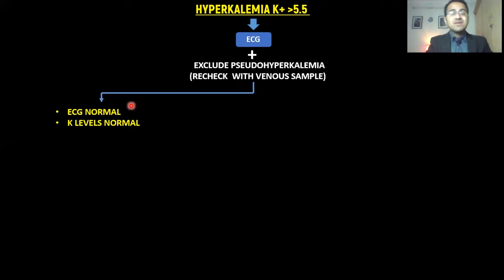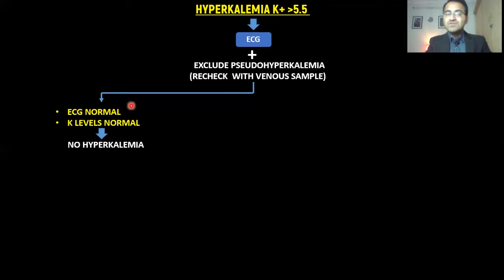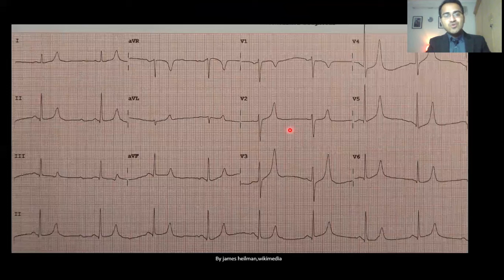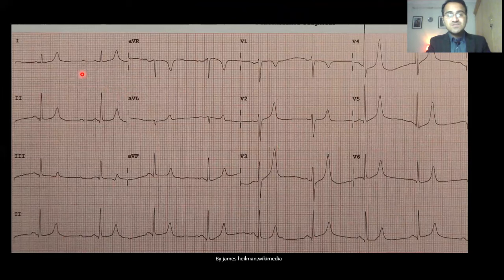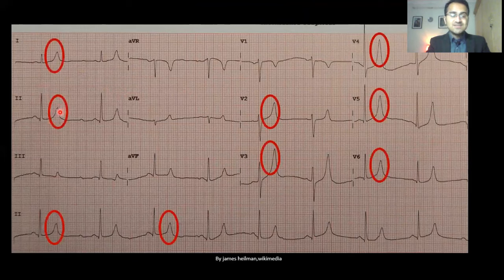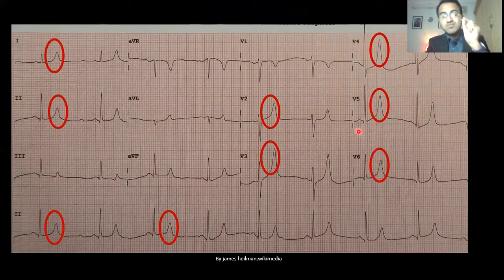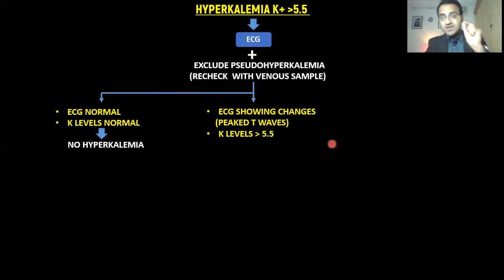If the ECG is normal and potassium levels are also normal, there is no hyperkalemia and it is excluded. However, if ECG shows changes such as peaked or tall T-waves, this indicates that high potassium levels are affecting the heart and can progress to arrhythmias. These T-waves — visible on the ECG tracing — signal that urgent treatment is needed.